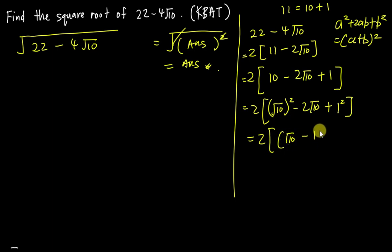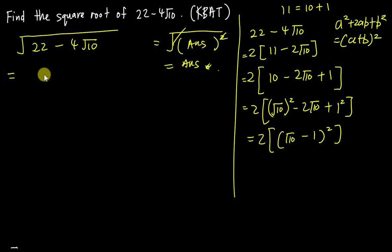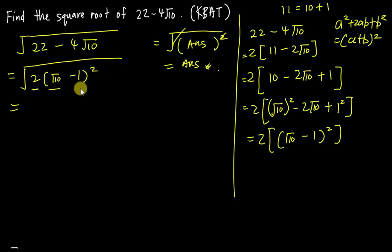Expanding (√10 - 1)²: the first term is (√10)² = 10, the middle term is 2 × √10 × (-1) = -2√10, and (-1)² = +1. That checks out. So we have 2(√10 - 1)². Now I take the square root of both sides: √2 · (√10 - 1), since the square and square root cancel.